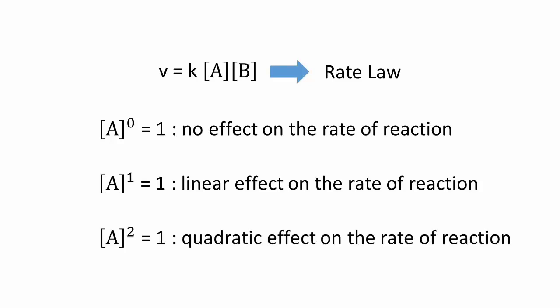If the exponent is 2, then the effect of the reactant's concentration is quadratic. In other words, if the concentration were to, say, triple, the reaction would proceed 9 times faster.